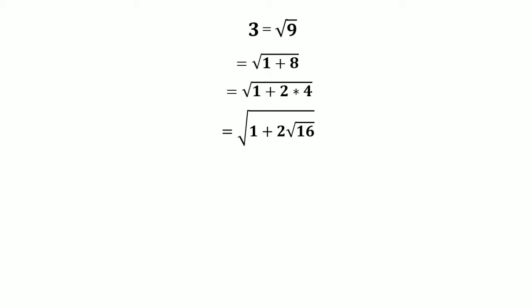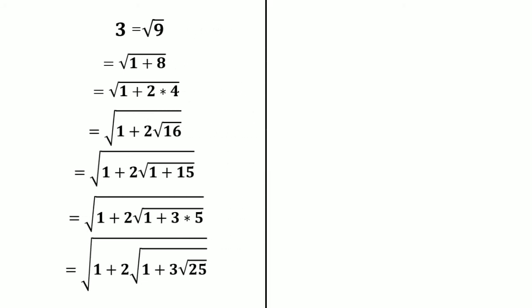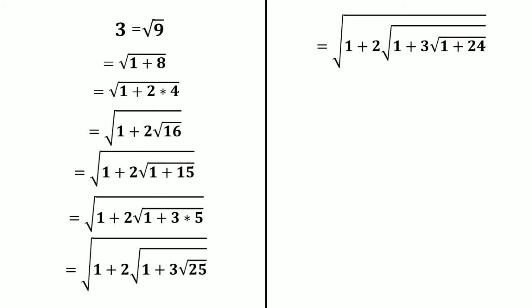We can express 16 = 1 + 15, so we get √(1 + 2·√(1 + 15)). Then 15 = 3 × 5, giving √(1 + 2·√(1 + 3·5)). We express 5 = √25, so √(1 + 2·√(1 + 3·√25)). Then √25 = √(1 + 24), so we have √(1 + 2·√(1 + 3·√(1 + 24))).